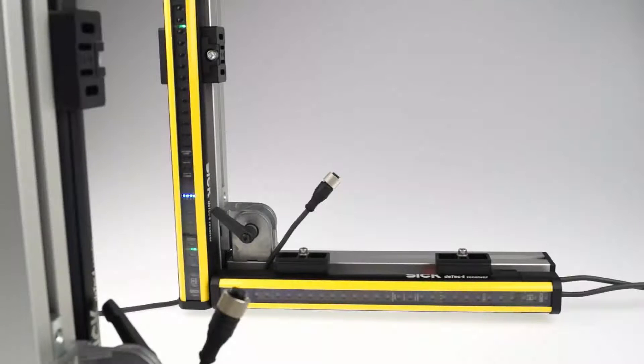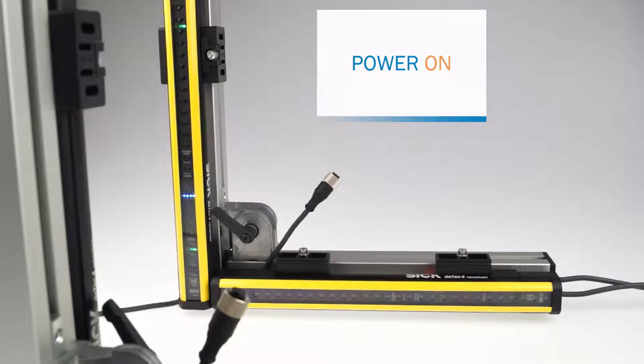To cascade another sender-receiver pair to an existing stand-alone system you need the system plug with extension connection on at least one sender and one receiver.